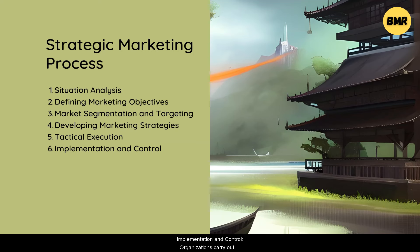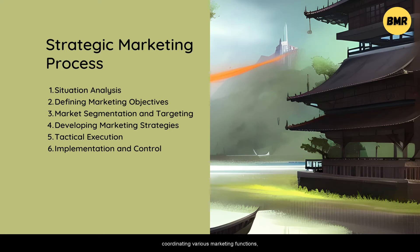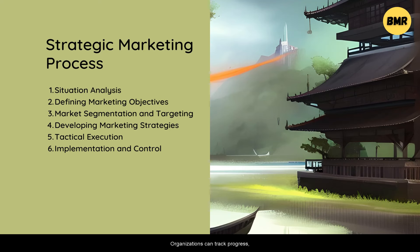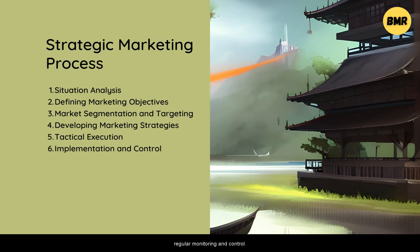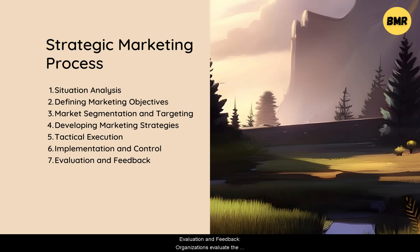Implementation and Control: Organizations carry out planned marketing activities while closely monitoring their performance. This includes allocating resources, managing budgets, coordinating various marketing functions, and ensuring that planned tactics are implemented on time. Organizations can track progress, identify deviations, and make necessary adjustments to maximize marketing effectiveness with regular monitoring and control.